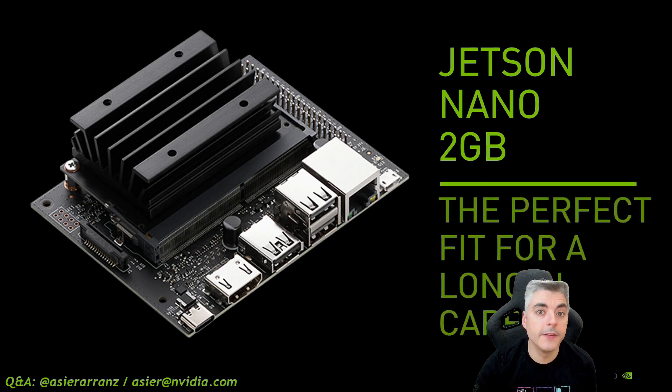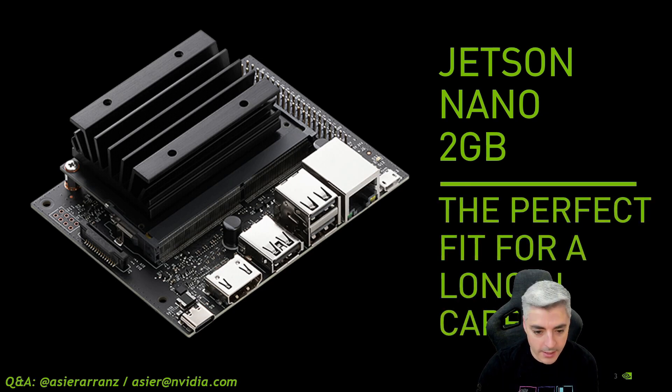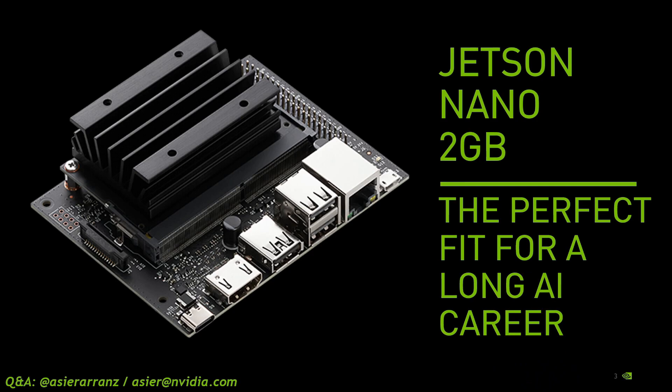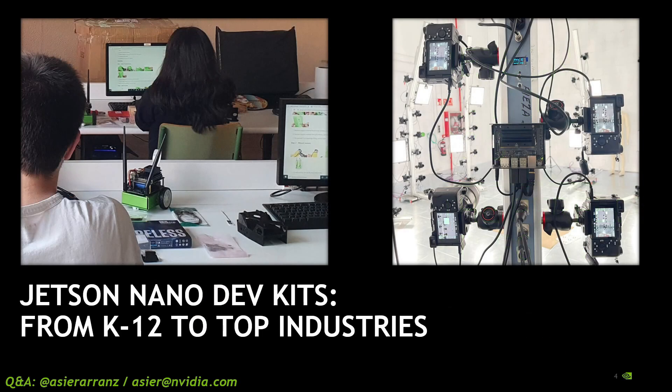The NVIDIA Jetson Nano is the perfect fit for a long AI career. We know that NVIDIA is being used in schools, in universities to make robots like the JetBot, and in industries — like in this image on the right where we see an NVIDIA Jetson Nano 4GB controlling 4 cameras to make a 3D scan of a full body. They are using 36 Jetson Nanos and 144 Sony cameras. I will speak about this example later in this presentation.